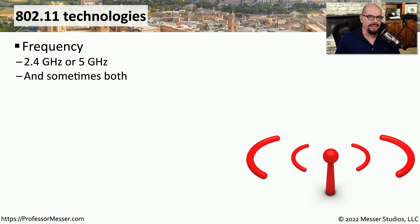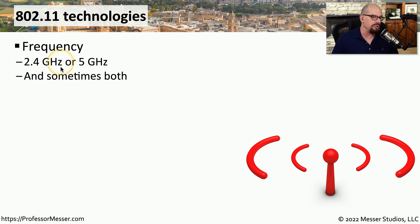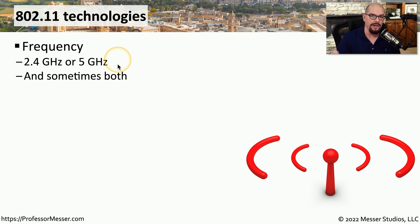If you're using an 802.11 network, there are a number of technical specifications that you need to be aware of. One is the frequency in use. As you may have already seen in the 802.11 standards video, there are many standards that use the 2.4 gigahertz range and other standards that use the 5 gigahertz range, and some of them use both of those ranges to communicate.